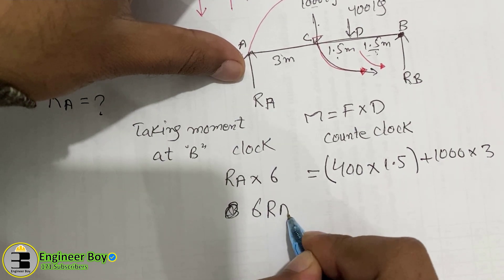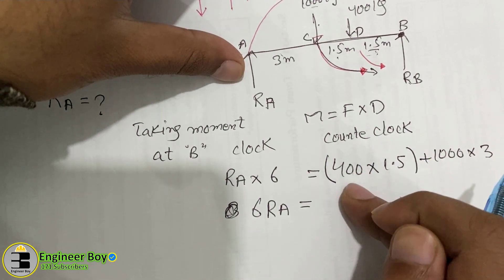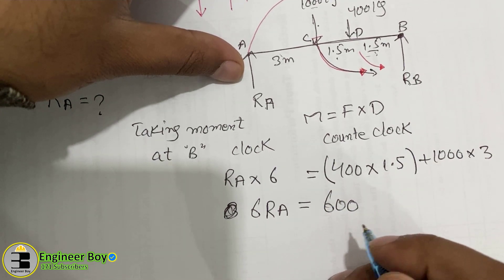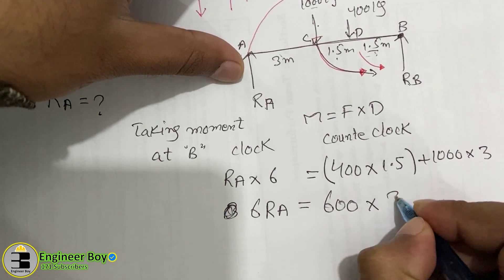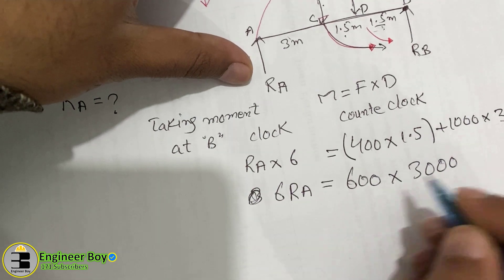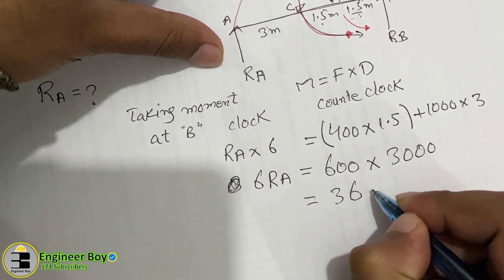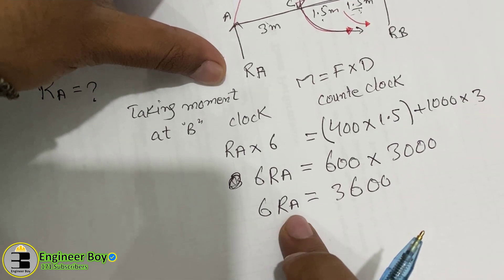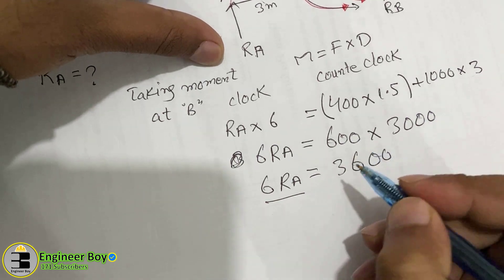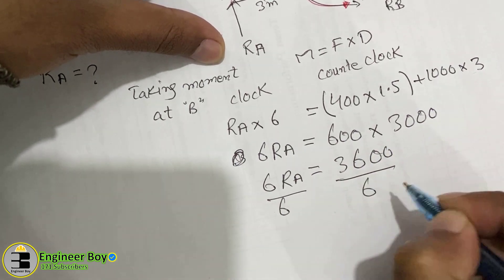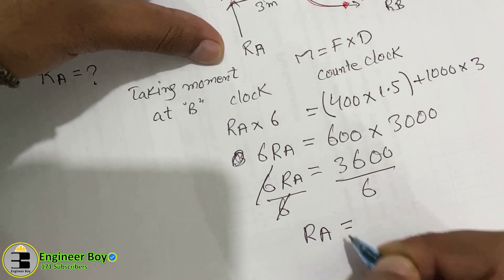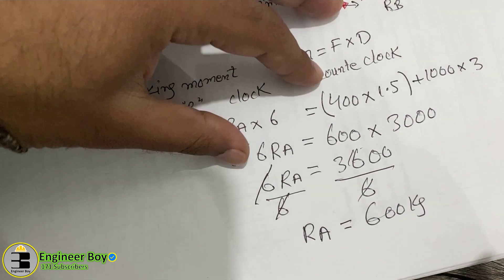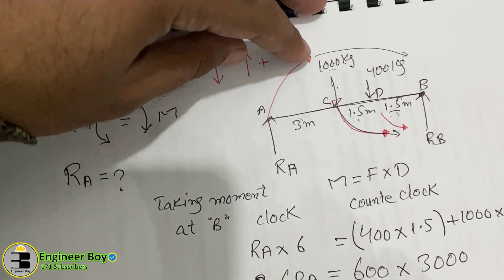Simplifying: 6·RA = 600 + 3000 = 3600. Dividing both sides by 6: RA = 600 kg. So RA is 600 kg.